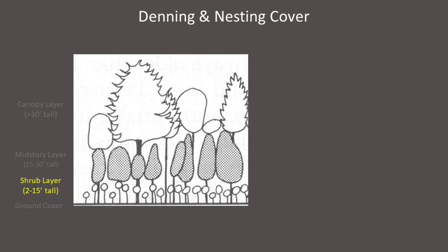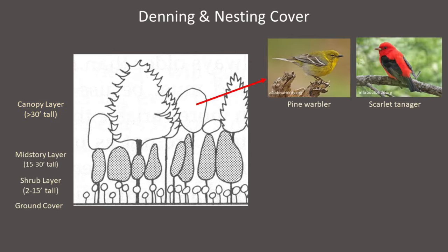Above this is the shrub layer, including shrubs and young trees growing between 2 to 15 feet tall. Above this is the mid-story layer, including tall shrubs and trees growing between 15 to 30 feet tall. At the top is the canopy layer — trees growing over 30 feet tall. In the forest, certain birds nest primarily in the canopy of tall mature trees. For example, pine warblers nest high up in pine trees and scarlet tanagers nest in the dense foliage of deciduous trees.